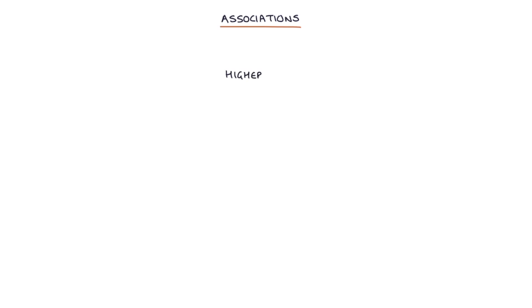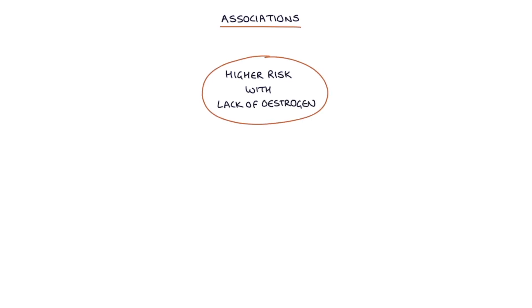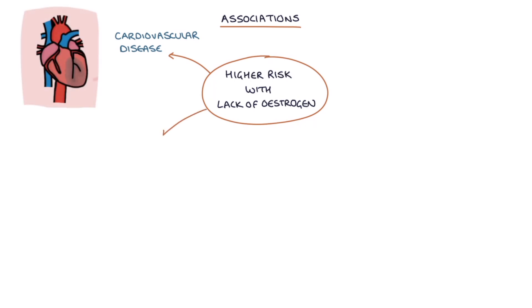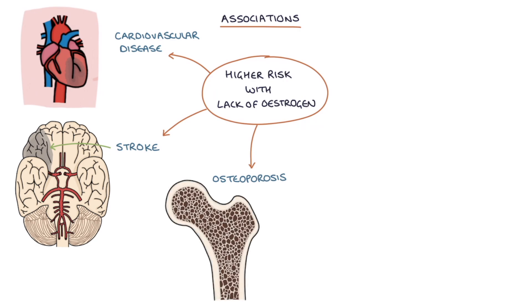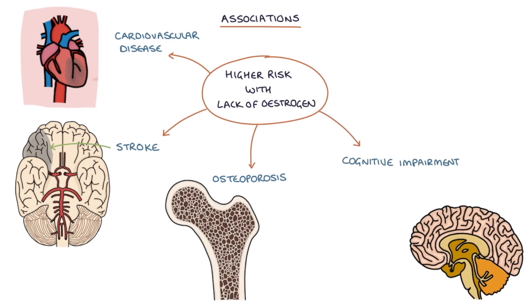Let's talk about the associations. Women with premature ovarian failure are at a higher risk of multiple conditions relating to the lack of estrogen. This includes cardiovascular disease, stroke, osteoporosis, cognitive impairment, dementia, and Parkinsonism.